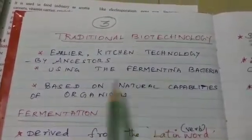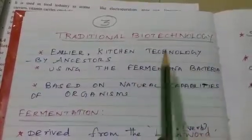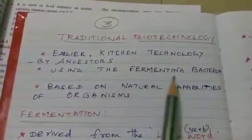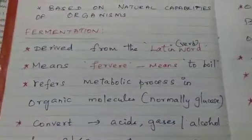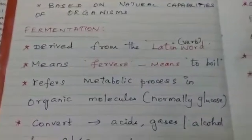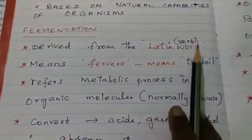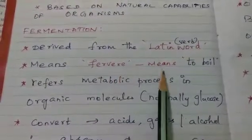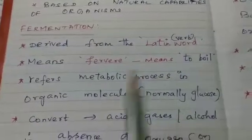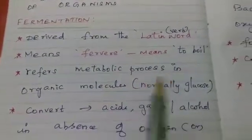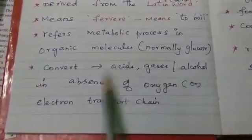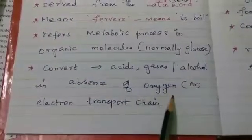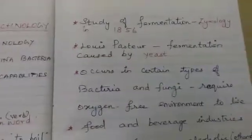Fermentation is the process of changing milk into curd, for example. What is fermentation and where is it derived from? It is derived from the Latin verb 'fermentare,' meaning 'to boil.' It refers to the metabolic process in which organic molecules such as glucose are converted into acids, gases, and alcohols in the absence of oxygen.